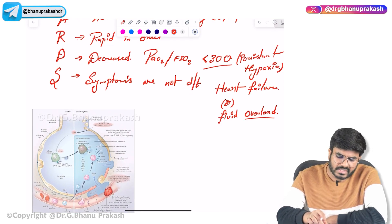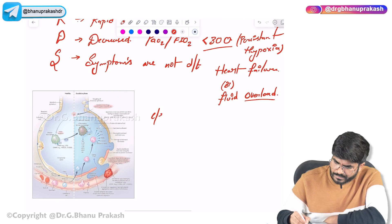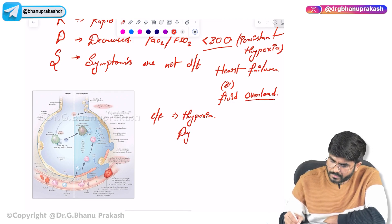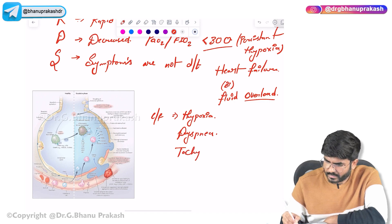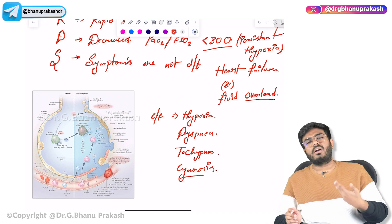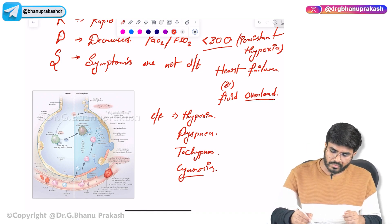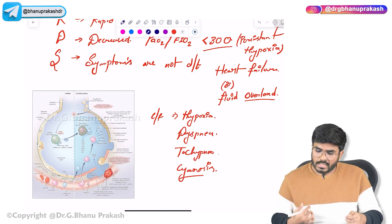The clinical features of ARDS include hypoxia or hypoxemia, dyspnea, tachypnea, and cyanosis. The patient is cyanotic because oxygenation is not properly happening and carbon dioxide is also not properly getting out of the body.